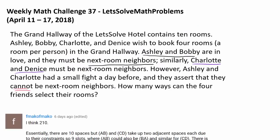Obviously, the constraint that Ashley and Charlotte cannot be next-room neighbors is making this question a little bit complicated. So let's start by ignoring this restriction and just counting how many ways we can put four of them into 10 rooms such that Ashley and Bobby are next to each other and Charlotte and Dennis are next to each other. Whenever you have constraints in counting problems, if you think about the question without the constraint, the problem often becomes much easier.